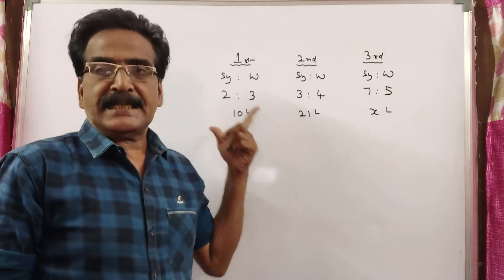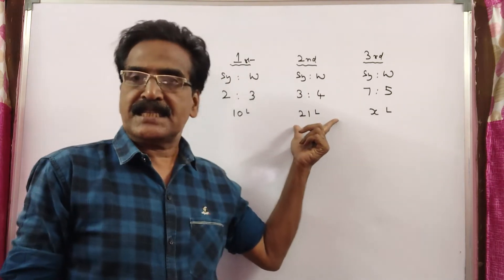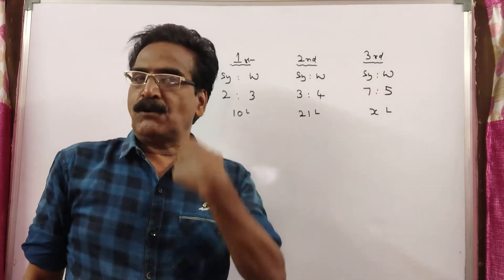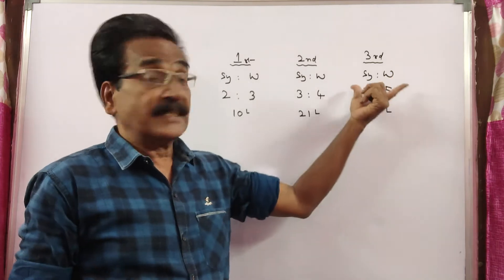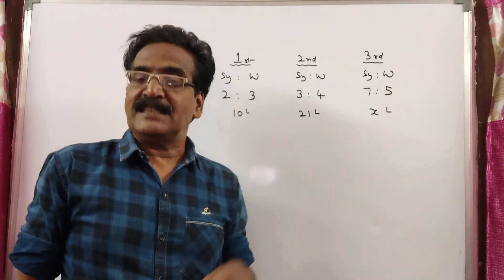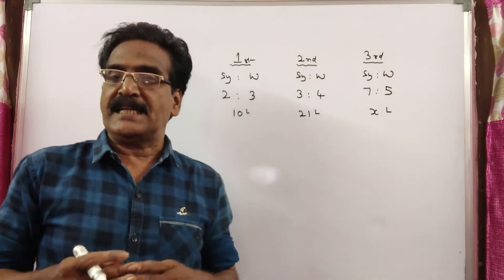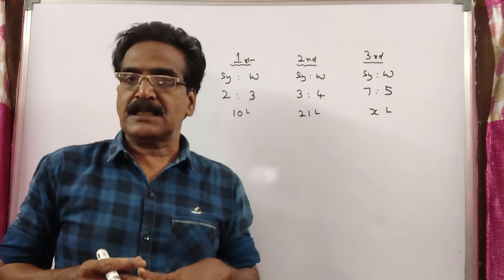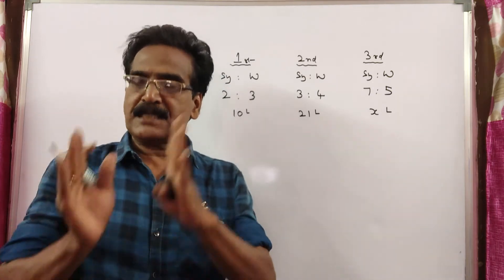Now 10 liters of mixture is drawn from the first bottle and 21 liters from the second bottle. The question is: how much quantity must be drawn from the third bottle so that in the final mixture from the three bottles, syrup and water are in the ratio 1 to 1? That is, syrup and water must be equal.